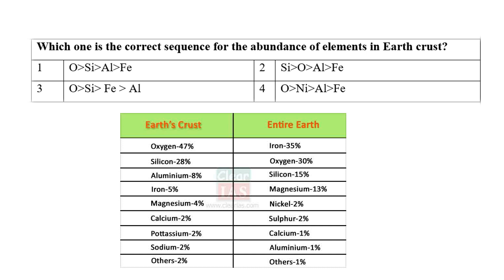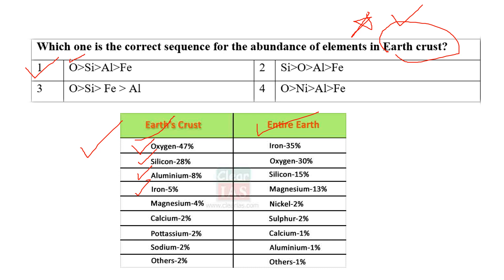Question six: Which one is the correct sequence for the abundance of elements in the Earth's crust? In the case of the Earth's crust, oxygen is found in the highest amount at 41%, followed by silicon at 28%, aluminium at 8%, and iron at 5%. So option number one is the right answer: maximum oxygen 41%, followed by silicon 28%, aluminium 8%, and iron 5%.